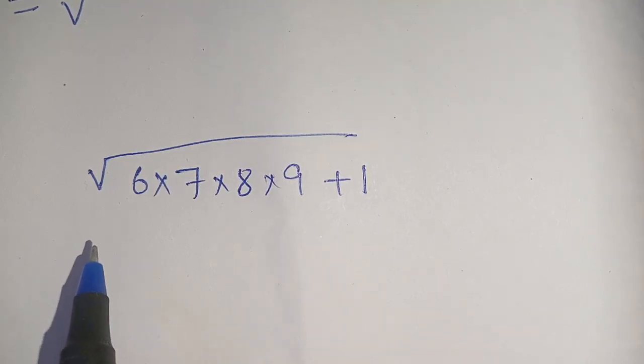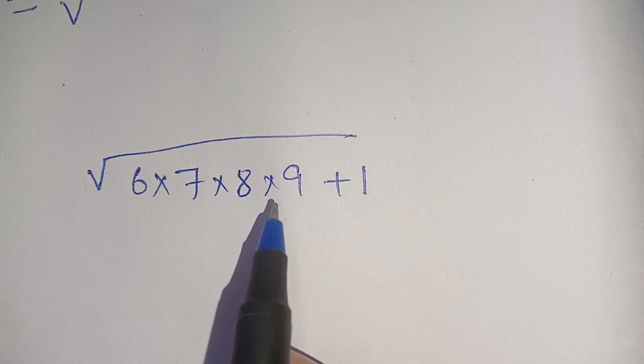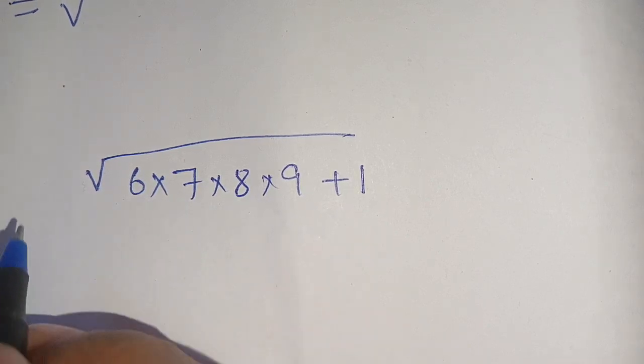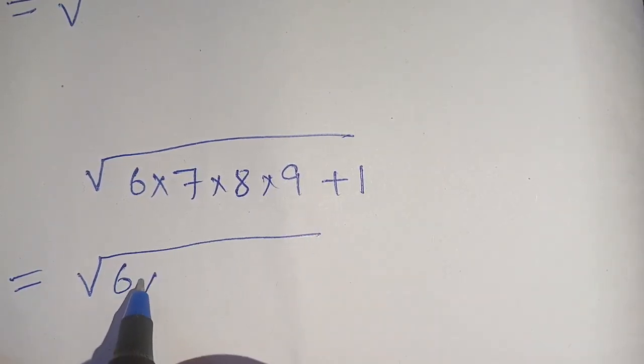Hello everyone, in today's video we are going to solve square root of 6 times 7 times 8 times 9 plus 1 without using any calculator. Let us solve this. We can write it as square root of 6 times 7 times 8, which becomes 56, times 9 plus 1.